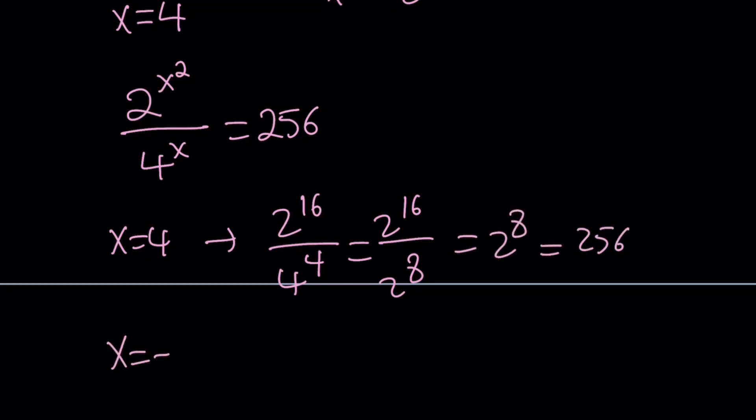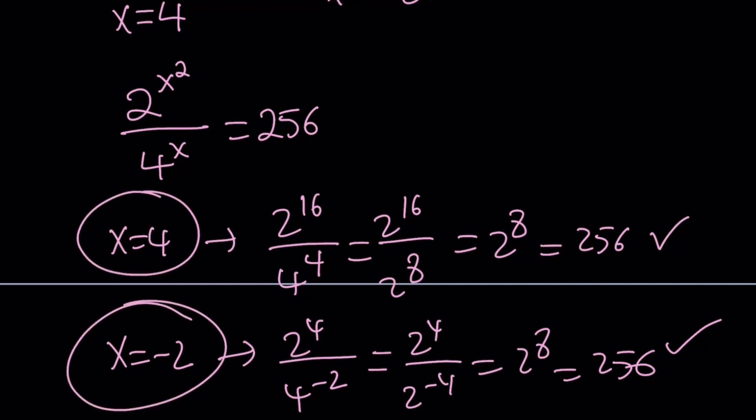If x is equal to negative 2, we get 2 to the power 4 divided by 4 to the power negative 2, which is 2 to the 8th, and that is equal to 256. So both of the solutions check, and they should because we didn't really square any sides or there is no domain problem. Everything looks positive.